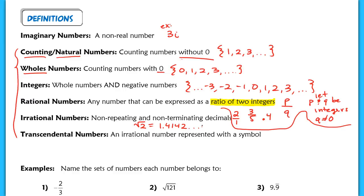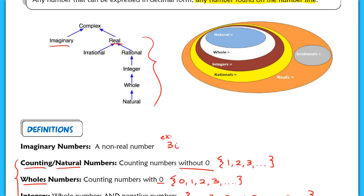We also have transcendental numbers. Your book refers to this every once in a while — it is also an irrational number that is represented with a symbol, like pi or e. These are both examples of transcendental numbers. Now I want to go through the abbreviations for these different sets, because it would be a pain to always write out, especially in proofs, something like 'let q be a natural number.'